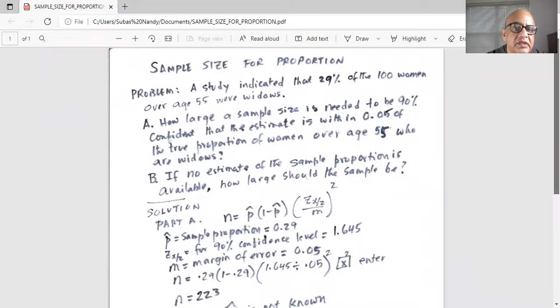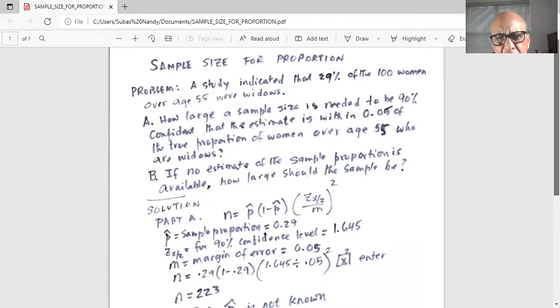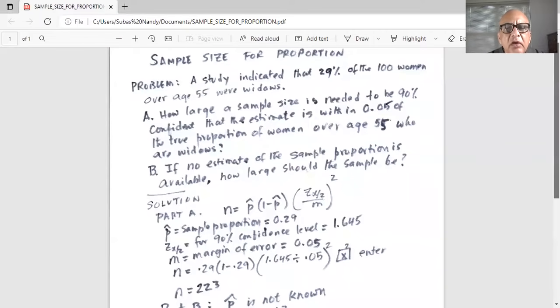So the sample size is 100, out of that sample 29% said over age 55 they're widows. How large a sample size is needed to be 90% confident that the estimate is within 0.05 of the true proportion of women over age 55 who are widows?